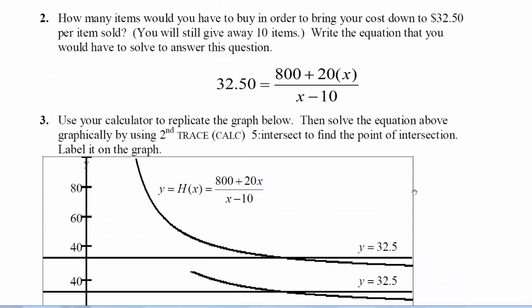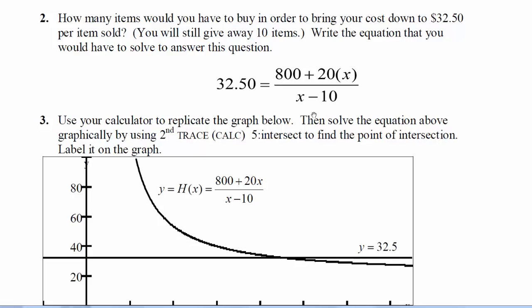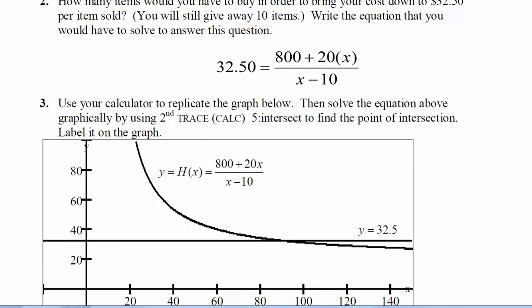So question three says, why don't we use our calculator to represent this graph? So we're going to answer question two by graphing. We're going to graph the left side of the equal sign and the right side of our equal sign. And the intersection should be our answer. So take out your calculator.